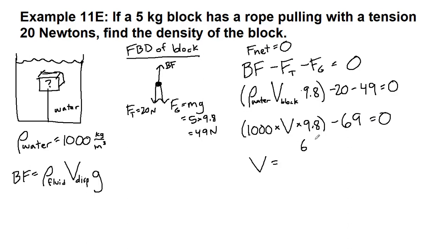And so the volume, if we add that to both sides and then divide by 9,800, the volume of the block, which we weren't told, is 69 divided by 9,800, and that's 0.00704, very small volume.